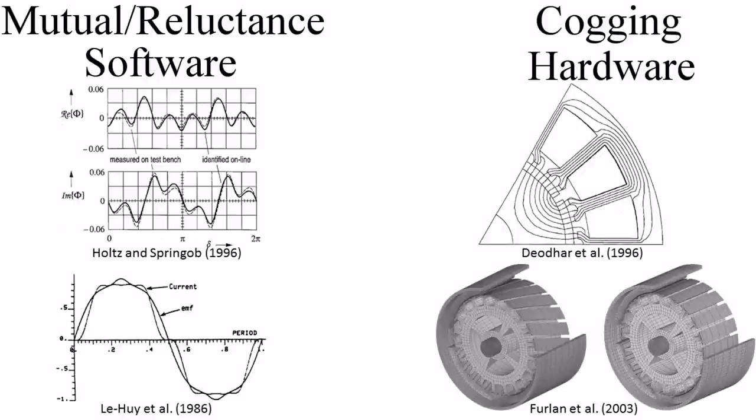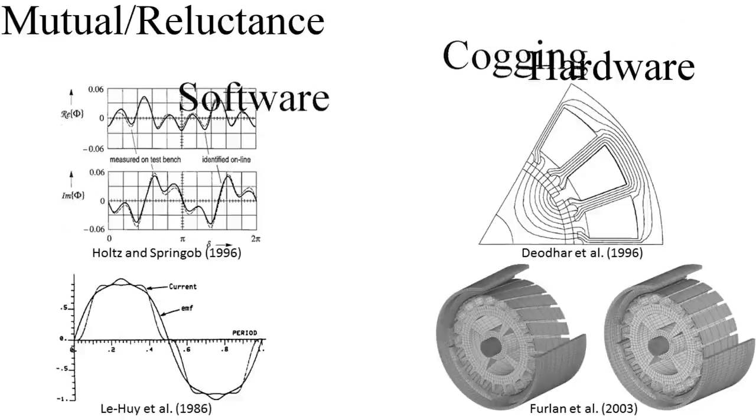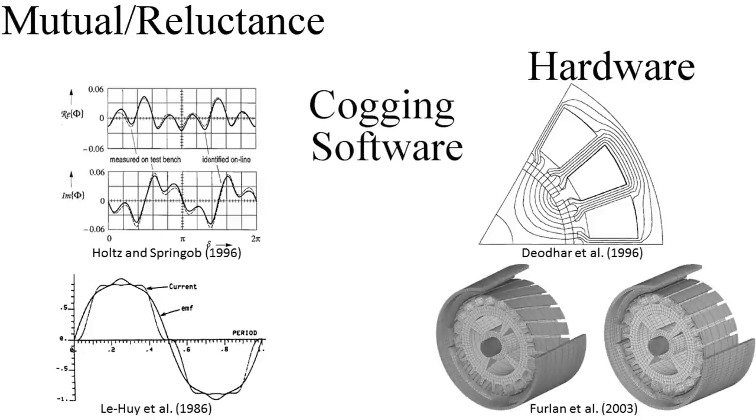Torque ripple has been heavily studied in the last 25 years, and most of the research falls under two categories: software methods for mutual and reluctance torque ripple minimization, and hardware redesign solutions for cogging torque ripple minimization. But can we combine the two philosophies to minimize cogging torque ripple with software?